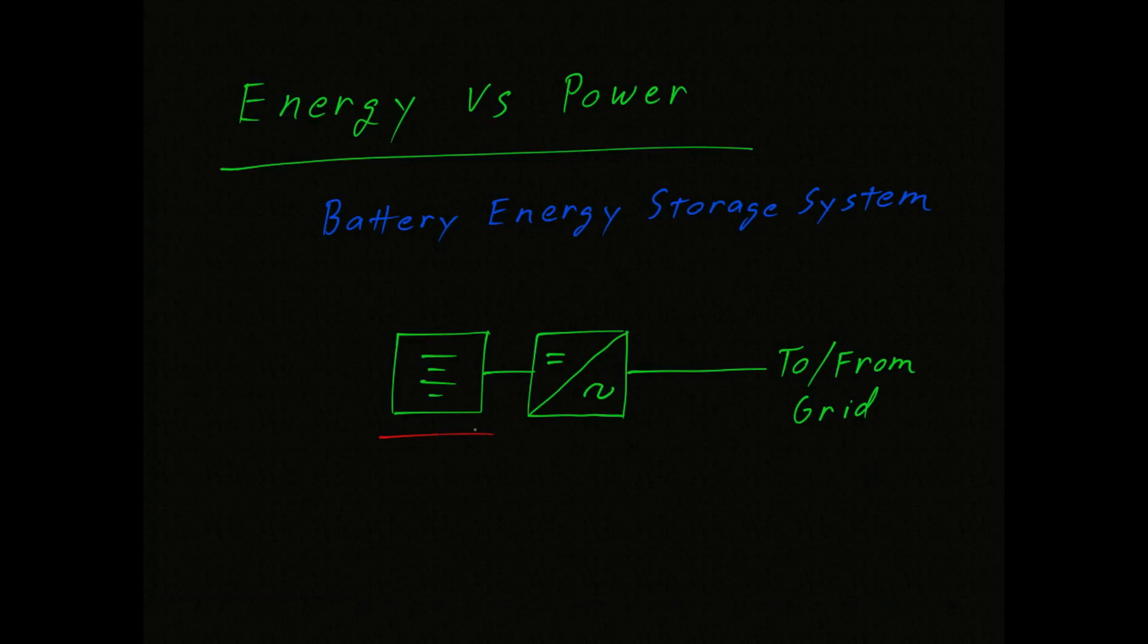On the left is the battery, and on the right is the power converter. This takes the direct current from the battery and changes it into alternating current, or vice versa. It can take energy from the power grid and convert it to direct current.